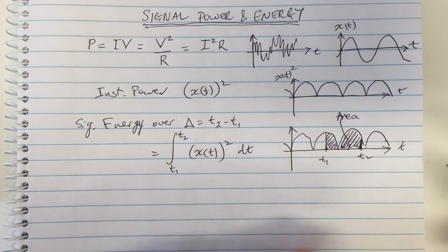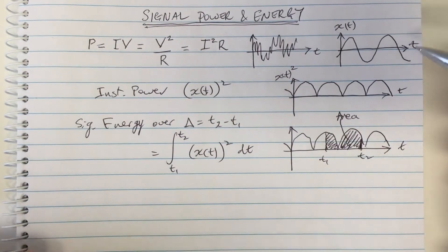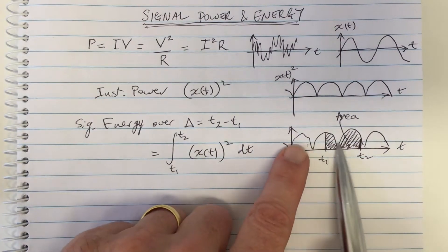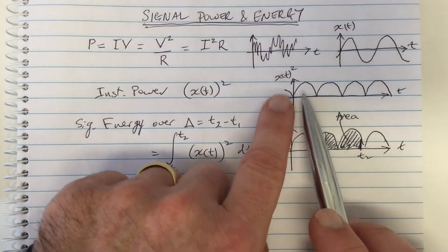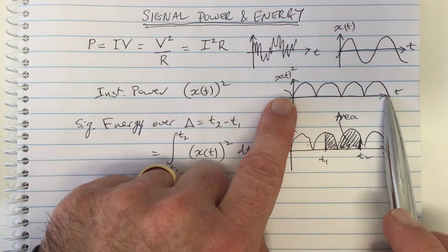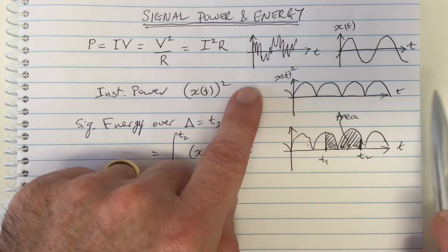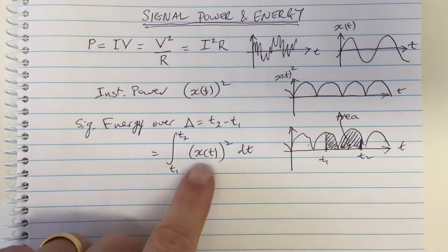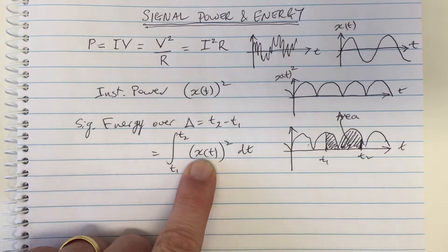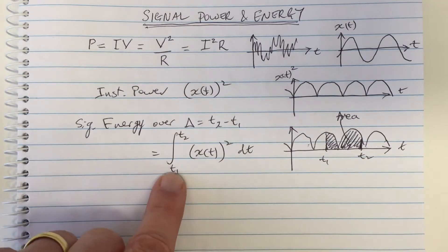Now in the case of the periodic waveform, this sine wave, let's think about that for a minute. This sine wave goes forever to negative infinity and positive infinity and this waveform, the square, will go forever. This area will just keep adding up. So for periodic waveforms, the signal energy, the total signal energy, would be infinite, infinity. It would be an infinite total signal energy.